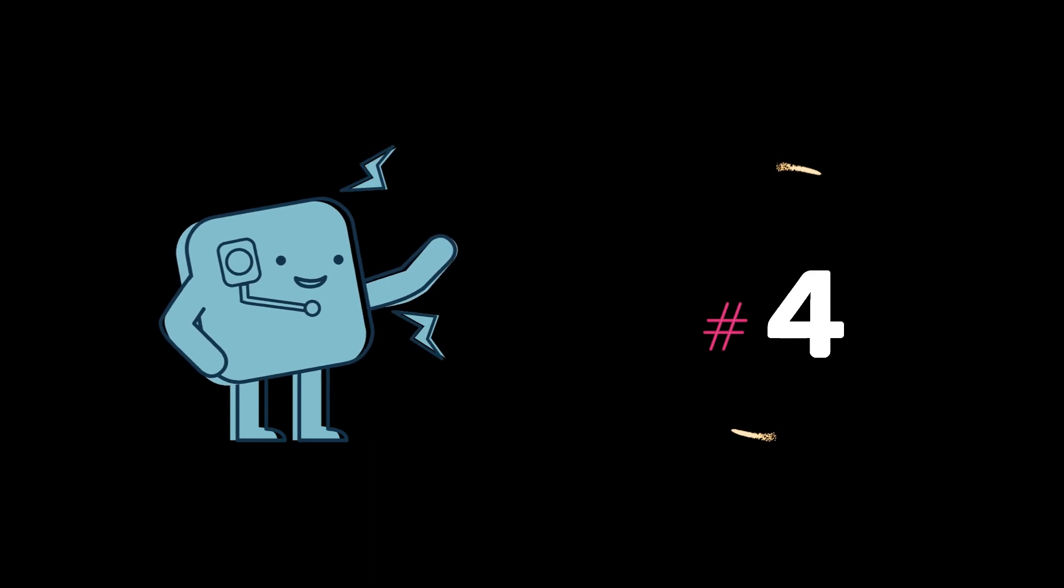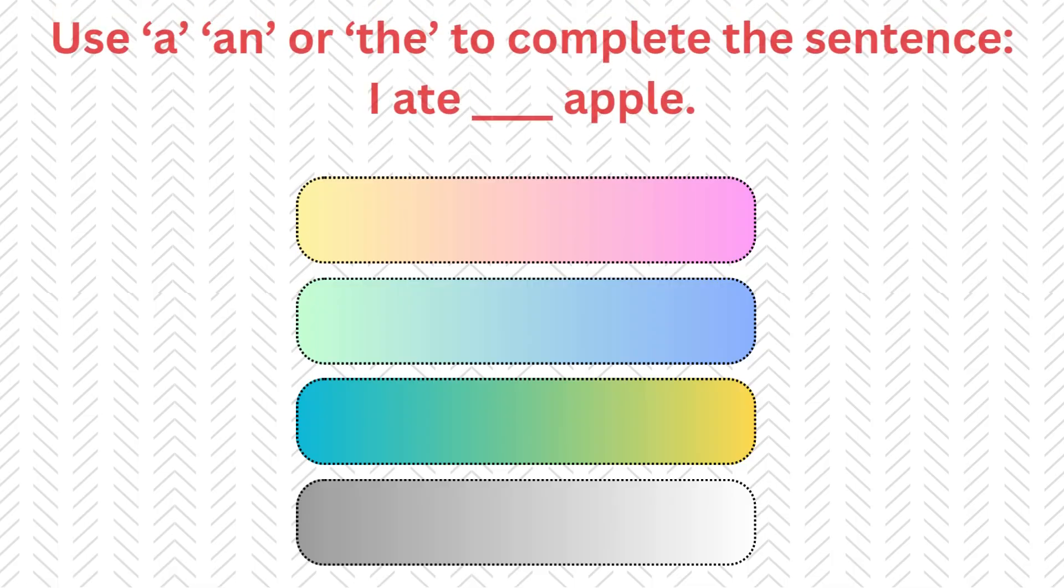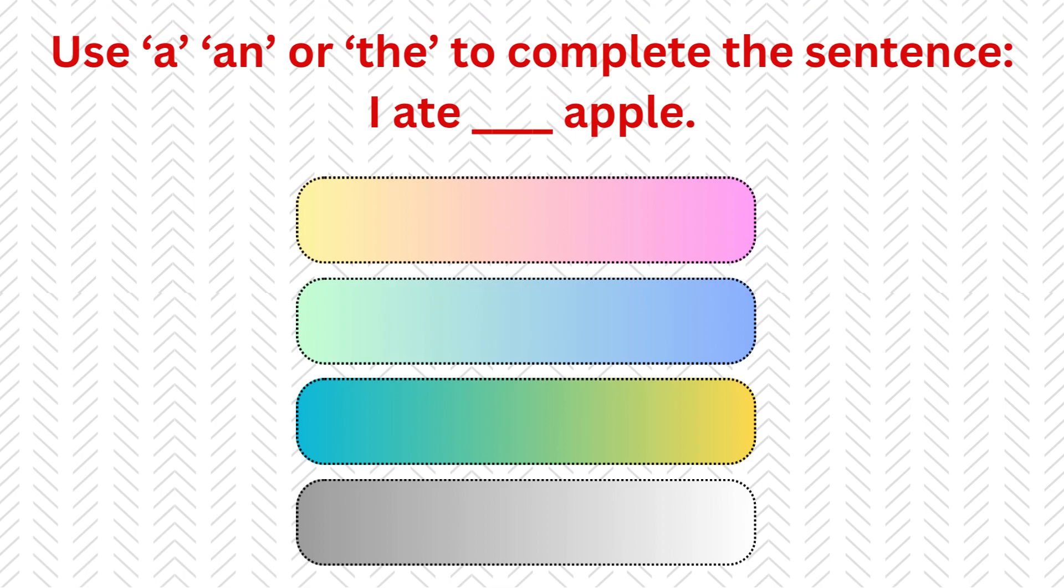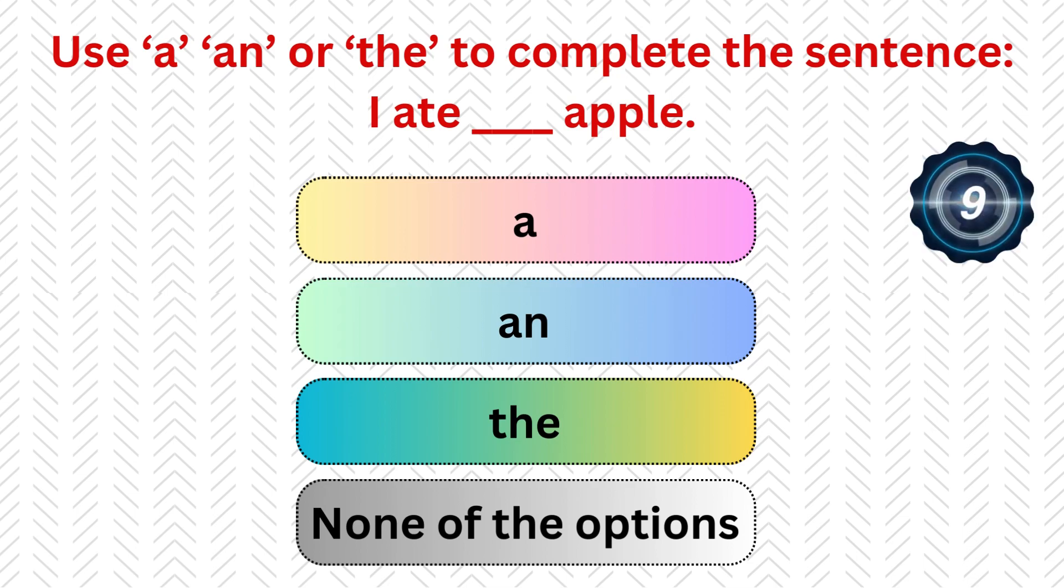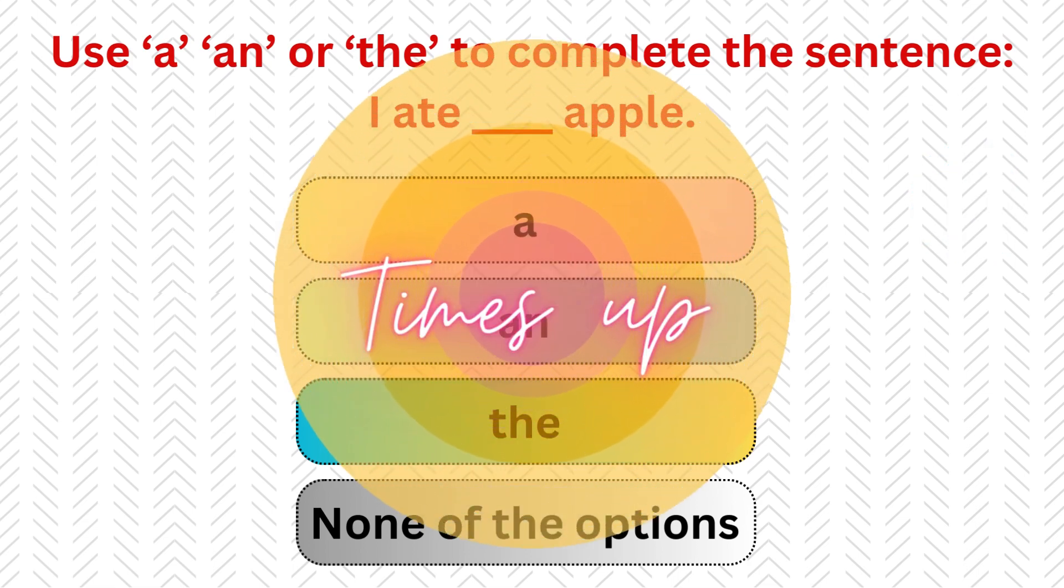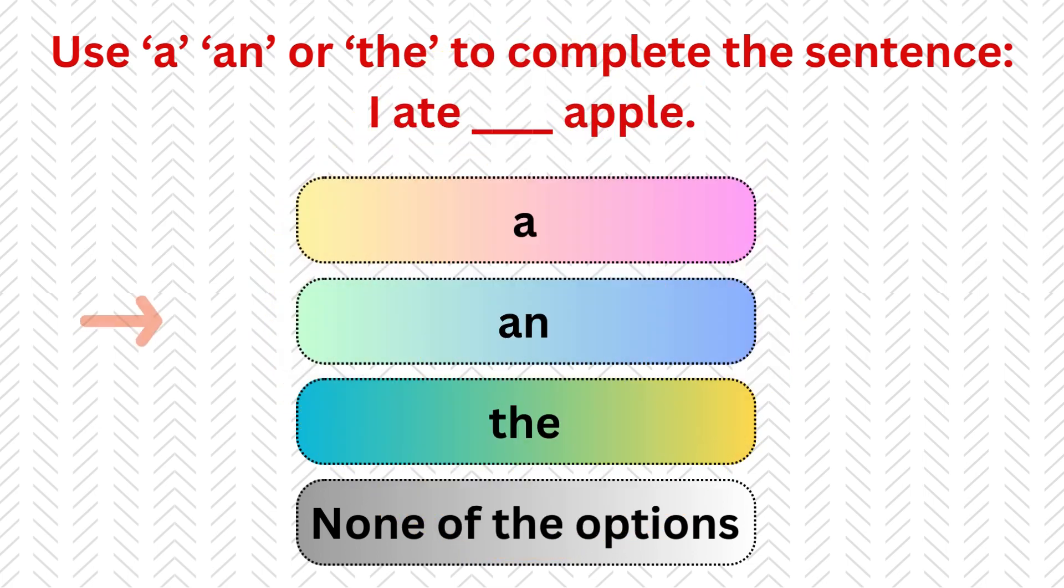Question number 4: Use a, an, or the to complete the sentence. I hate dash apple. Options: a, an, the, or none of the options. Your time starts now. Time's up. Let's see the answer: an. I ate an apple.